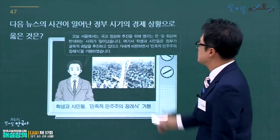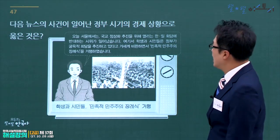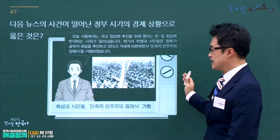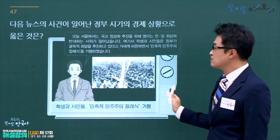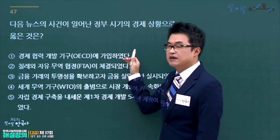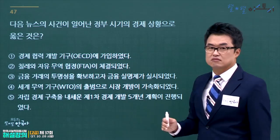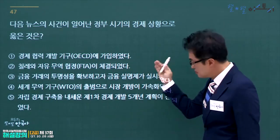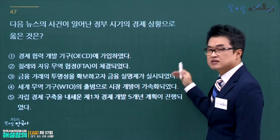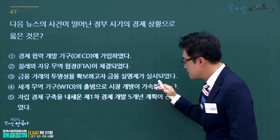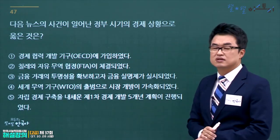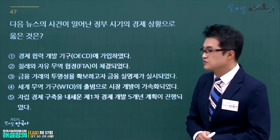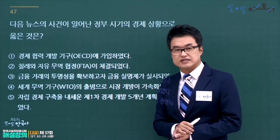한일 국교정상화에 반대하는 6·3 시위가 등장하는 정부는 박정희 정부입니다. 박정희 정부의 경제정책을 고릅니다. OECD 가입, 금융실명제, 세계무역기구 가입은 김영삼 정부, 미국과의 자유무역협정은 노무현 정부입니다. 제1차 경제개발 5개년계획을 추진한 것이 박정희 정부이므로 정답은 5번입니다.